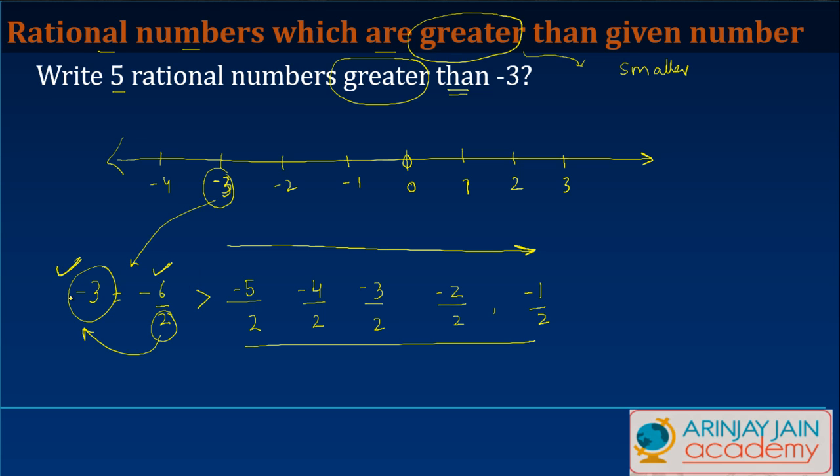You can choose any denominator that you want. You could have chosen -9/3. In that case, -8/3, -7/3, -6/3, -5/3, and so on.